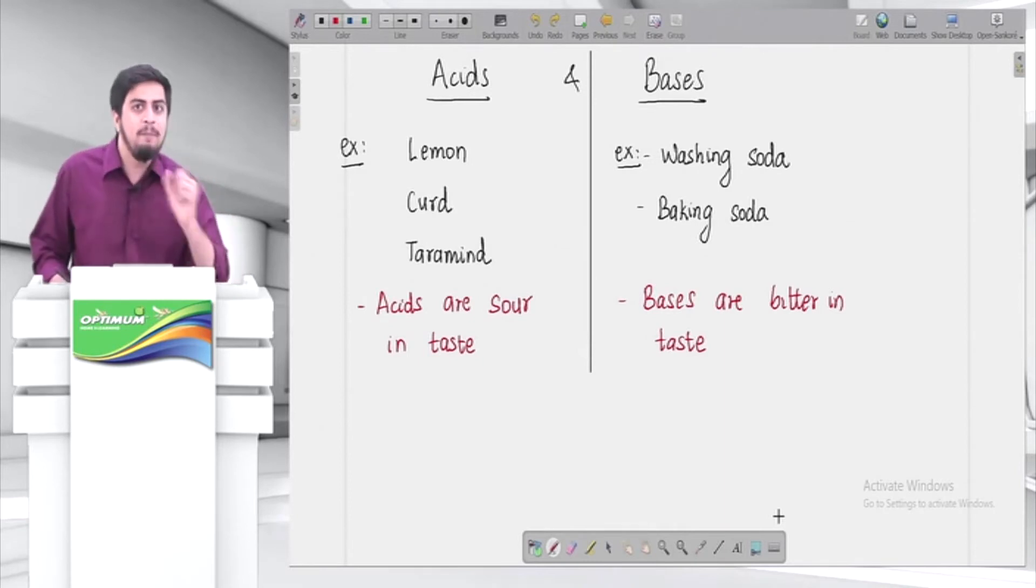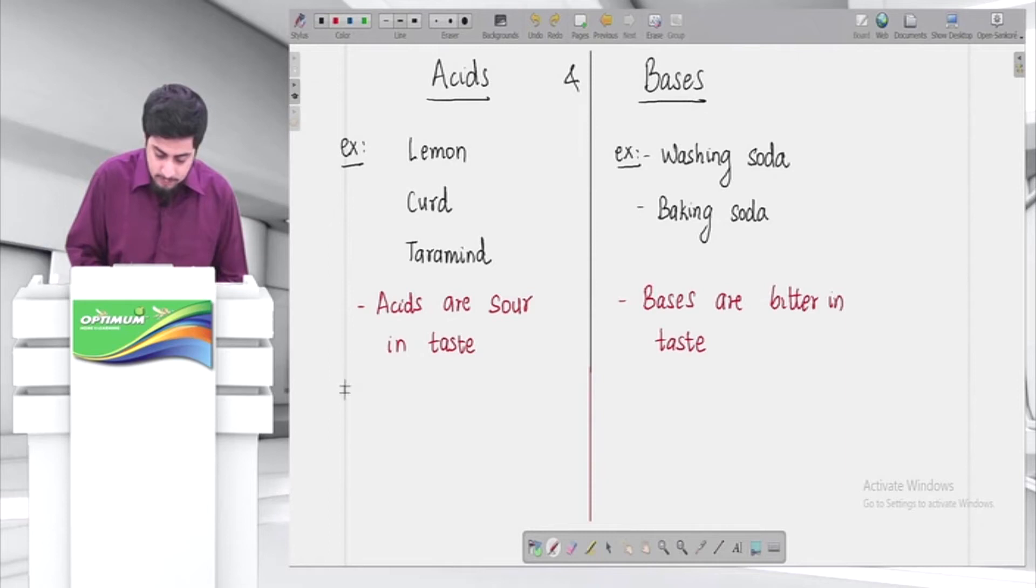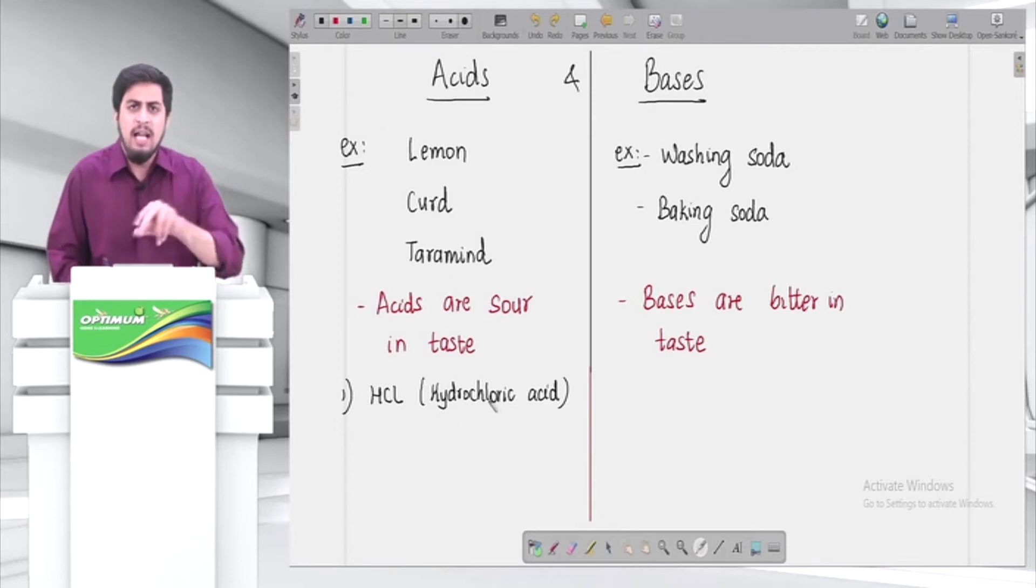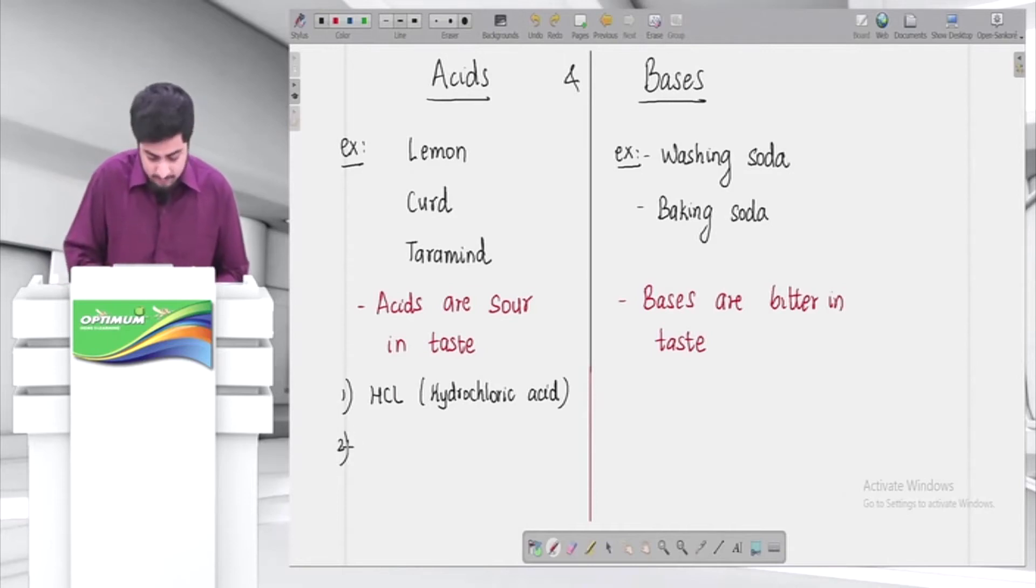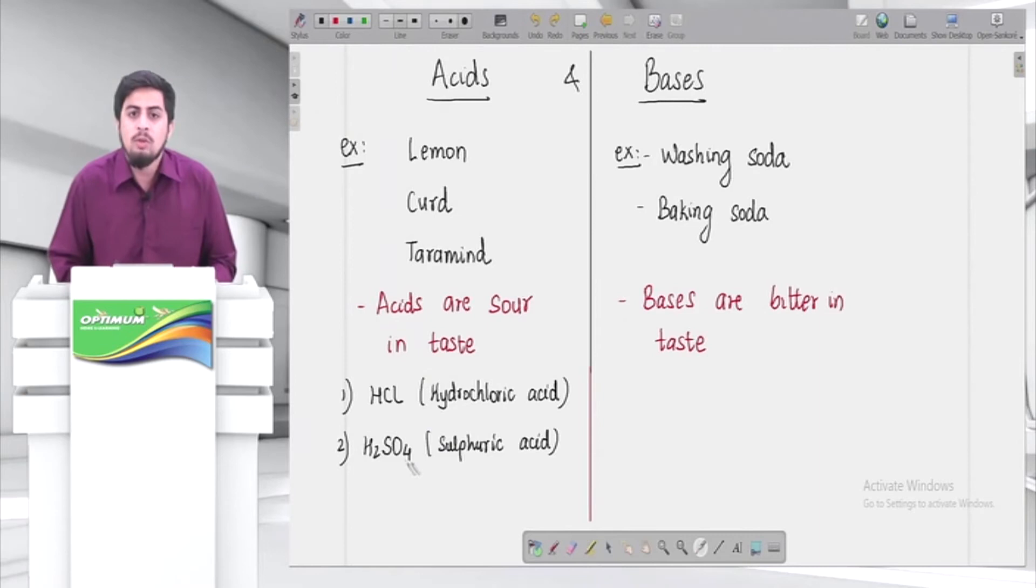Now, let us study some chemical acids and chemical bases in this chapter. One very famous acid is HCl - formula likh raha hoon. HCl is hydrochloric acid. I'm writing both formula and name so you remember. Because in textbooks, it just mentions HCl. You should know HCl is hydrochloric acid, made up of hydrogen and chlorine. One very famous acid is H2SO4. H2SO4 is sulfuric acid. Common name is sulfuric acid; chemical name is hydrogen sulfate.